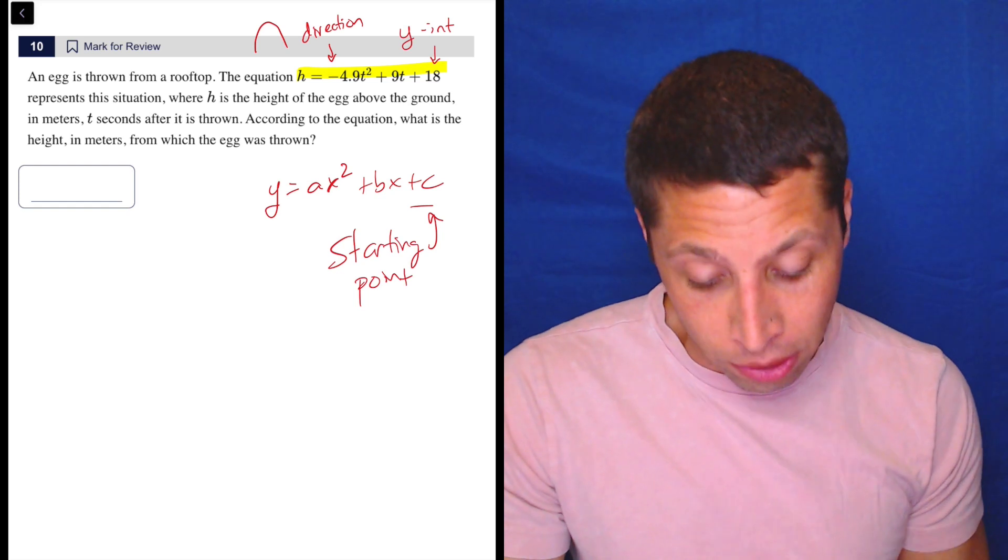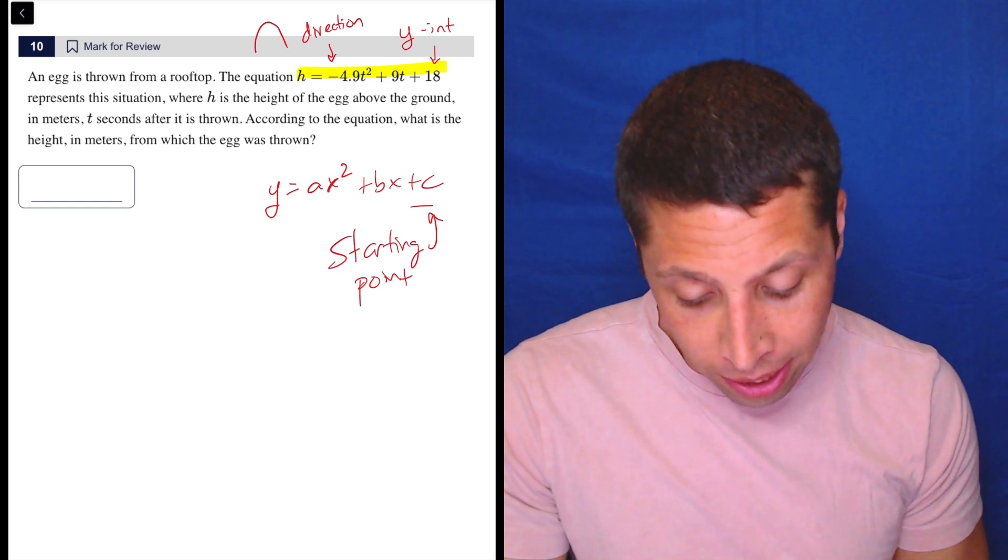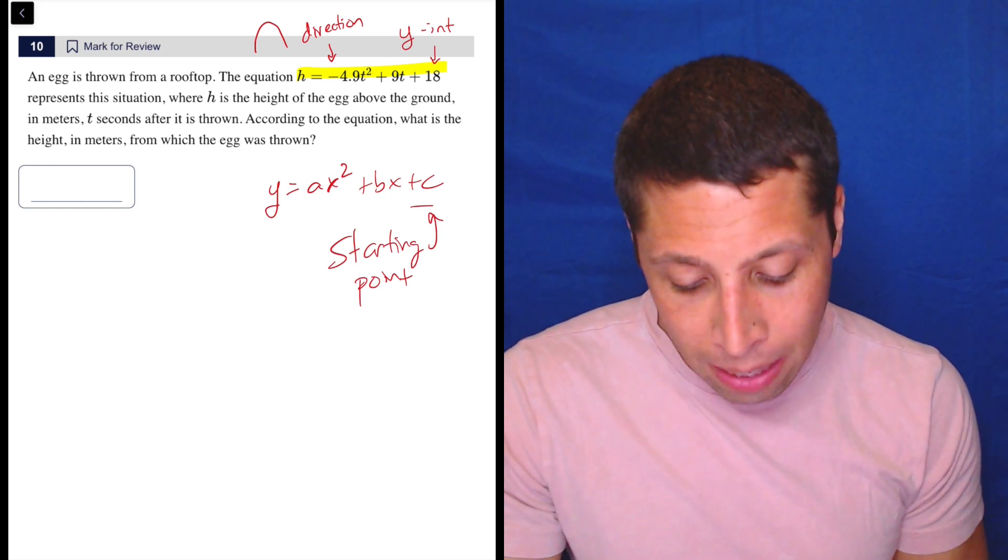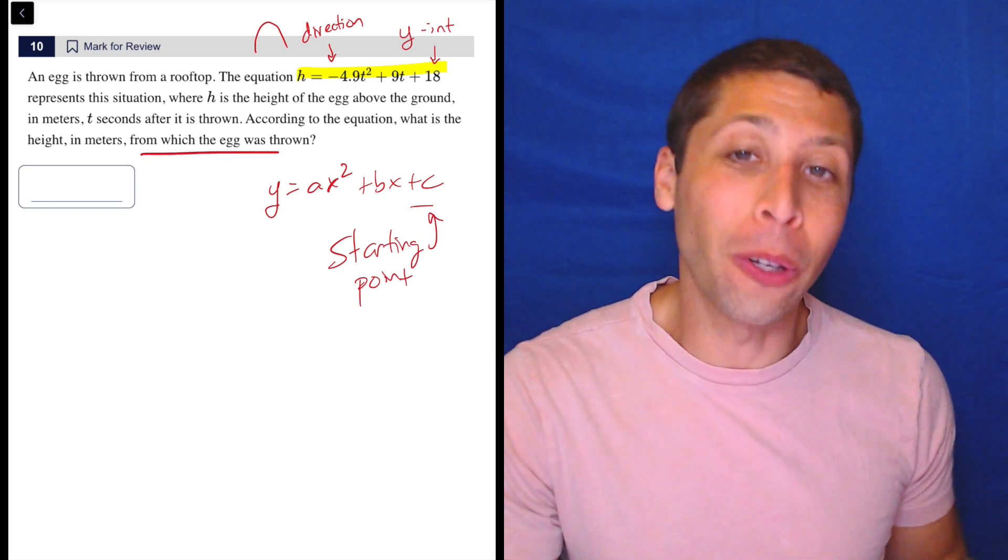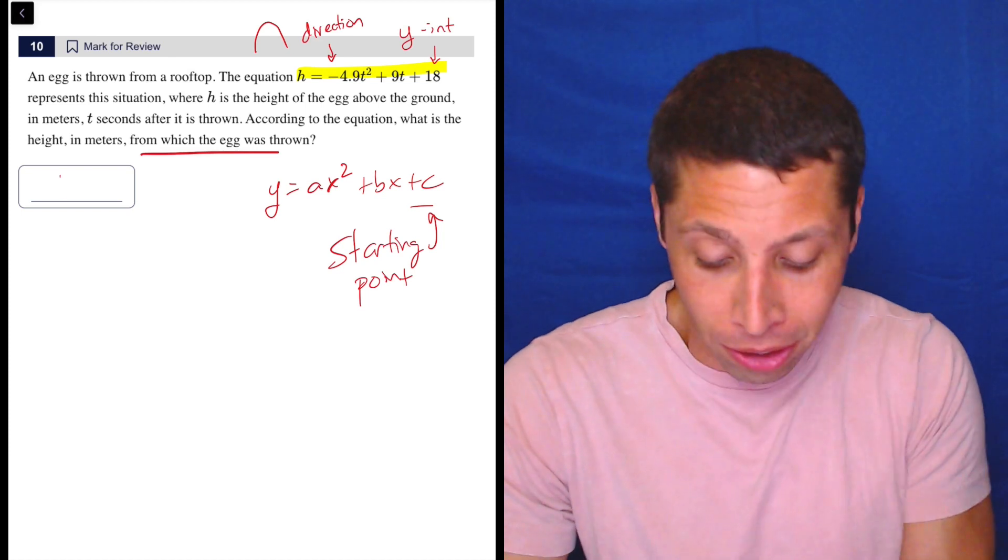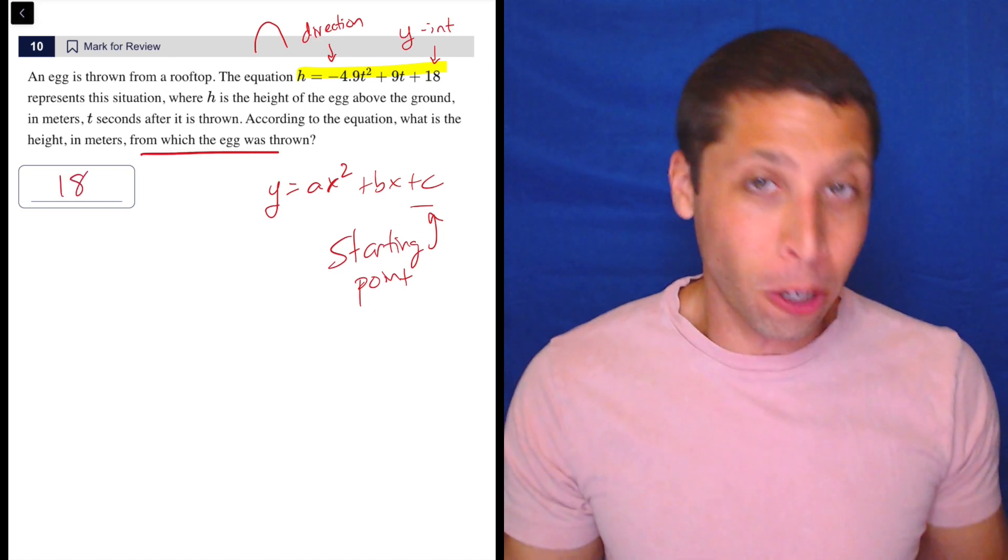That's just going to appear in this equation. So, what do they ask for here? Well, they give us the height, the t-meter seconds. According to the equation, what is the height in meters from which the egg was thrown? So, that's the starting point. We're throwing the egg. That's getting this whole equation started. So, it's just the y-intercept. It's 18. We don't have to do any work for this question.